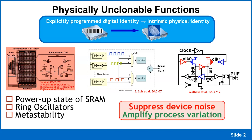Since we want stability — this number to be the same for the lifetime of the die — transient phenomena like thermal noise, voltage fluctuations, temperature variations, and aging can disrupt this random value. So we put in techniques to suppress device noise, while amplifying process variation. We use minimum-size devices and lay these out using analog circuit techniques that remove systematic variation, leaving only the random variation that the process gives you.